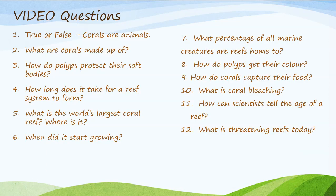Let's take a look at the questions. One: true or false — corals are animals. Two: what are corals made up of? Three: how do polyps protect their soft bodies? Four: how long does it take for a reef system to form? Five: what is the world's largest coral reef and where is it? Six: when did it start growing? Seven: what percentage of all marine creatures are reefs home to? Eight: how do polyps get their color? Nine: how do corals capture their food? Ten: what is coral bleaching? Eleven: how can scientists tell the age of a reef? And twelve: what is threatening reefs today?